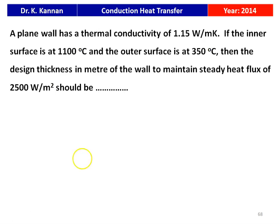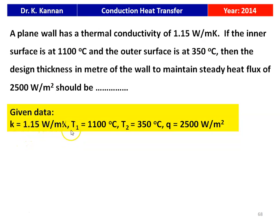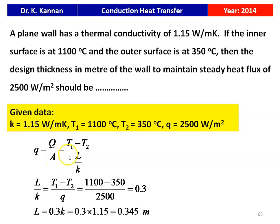The next question is from the 2014 question paper. A plane wall has thermal conductivity of 1.15 W/mK. The inner surface is at 1100°C and the outer surface is at 350°C. The design thickness to maintain a steady heat flux of 2500 W/m² is: L/K = (T₁ − T₂)/Q = (1100 − 350)/2500 = 0.3. Therefore L = 0.3 × 1.15 = 0.345 meter.